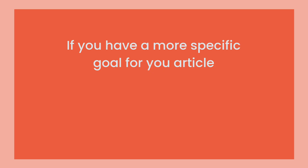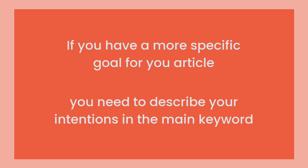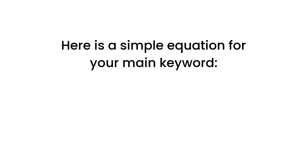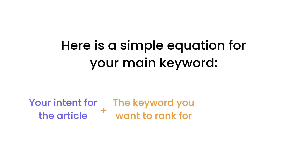If you have a more specific goal in mind for your content, you need to describe your intentions in the main keyword. Here's a simple equation: your main keyword should be your intent for the article, plus the keyword you want to rank for, plus any other critical information.